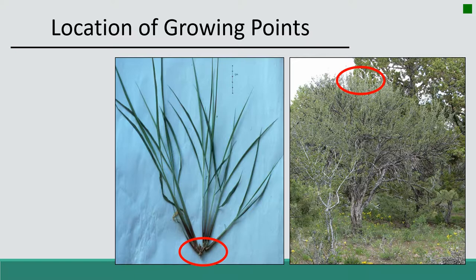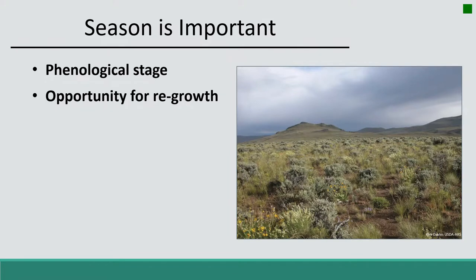Understanding the location of the growing points, or those meristematic tissues that are actively dividing, is a critical characteristic when you're trying to manage plants for any kind of disturbance — whether that's grazing or fire. We also have to understand the phenological stage of the plant community, because plant response to fire really depends on when the fire occurs. Plants are much more resistant to fire when they're dormant and carbohydrates are in reserve in their roots.